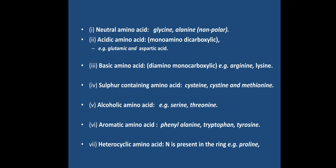Depending on the type of side chain, amino acids can be categorized. Neutral amino acids like glycine and alanine have no acidic or basic group in the side chain and are non-polar. Acidic amino acids are mono-amino, di-carboxylic — they have an extra carboxylic acid group in the side chain apart from the one on the alpha carbon. Examples include glutamic acid and aspartic acid.